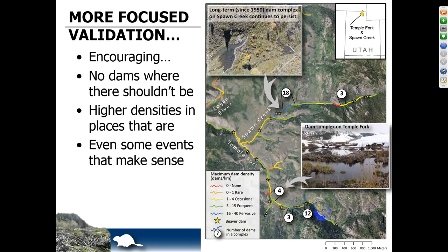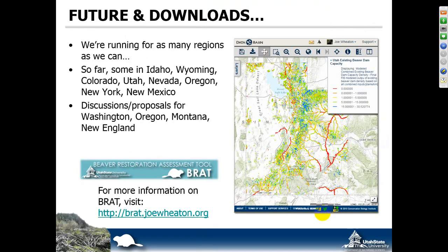This particular dam complex over a distance of about half a kilometer has 18 dams, and the capacity here is somewhere in that 16 to 40 dams per kilometer — so this is working out quite nicely. This is a dam complex that's been in since at least the 1950s, if not longer. We've got another dam complex up here that the model is predicting high capacity for. We weren't seeing any beaver there currently, but in 2011, a complex downstream blew out, and they moved upstream precisely to the area where the model predicts high capacity, and they built 12 dams in less than a month. So things make sense with the model predictions at both broader and more local scales.